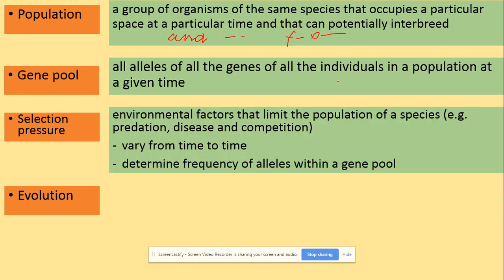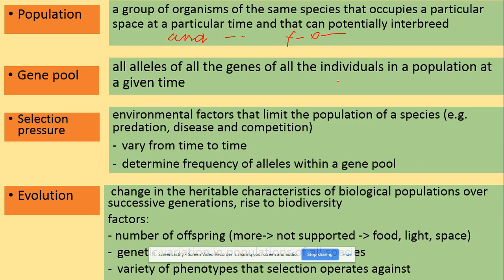The gene pool contains all of the alleles of all of the genes within that population at a given time. Selection pressures are environmental factors that limit the population of a species and determine the frequency of alleles within a gene pool. Evolution is the change in the heritable characteristics of biological populations over successive generations, giving rise to biodiversity.